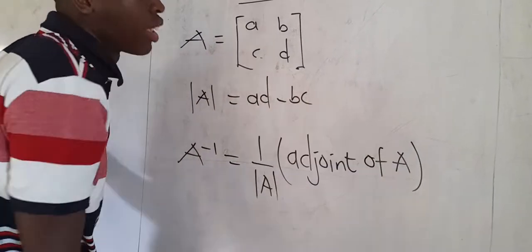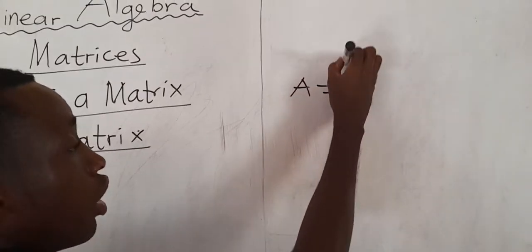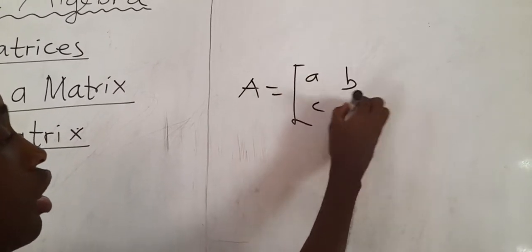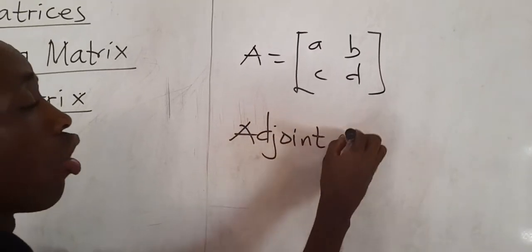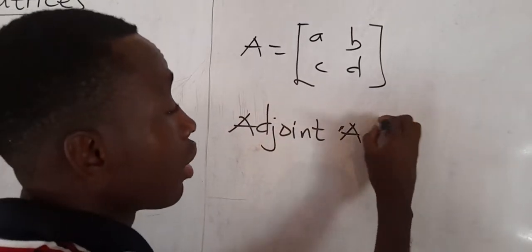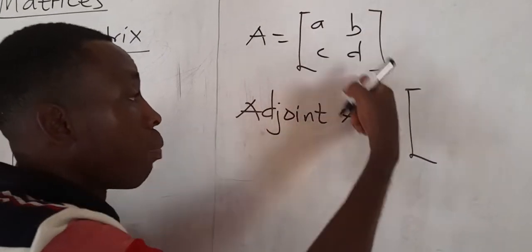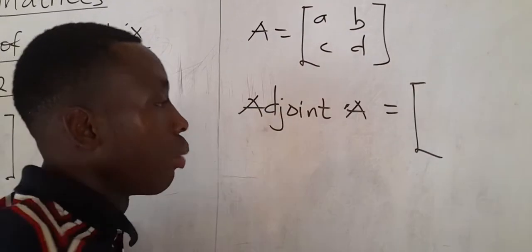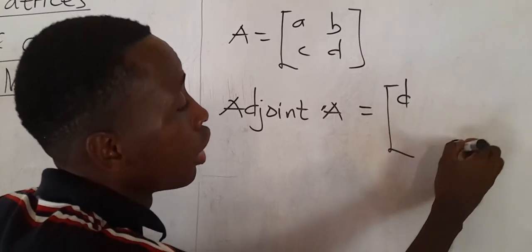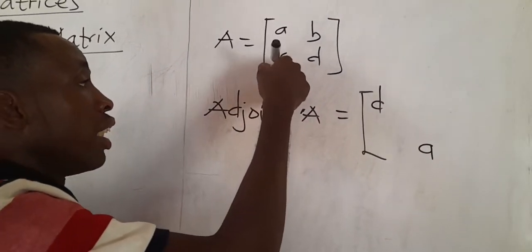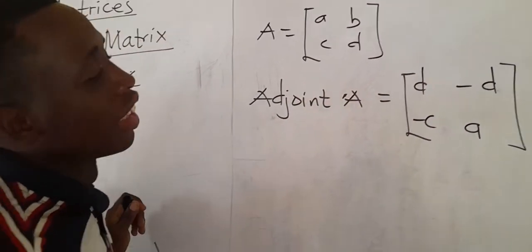Now what is the adjoint? So if you have a matrix A which is [a, b; c, d], the adjoint of A simply means that you swap the positions of the principal diagonal elements. So in place of a you put d, and in place of d you put a. Maintain the positions of c and b but negate them.